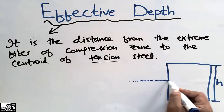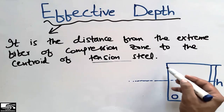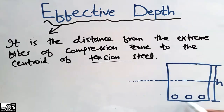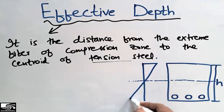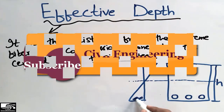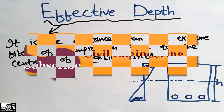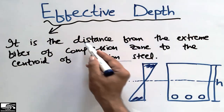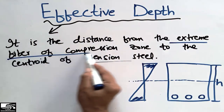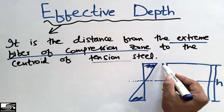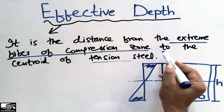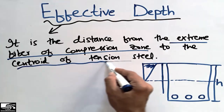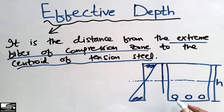We know that beams have a neutral axis. Above the neutral axis we have the compression zone, and at the bottom we have the tension zone. The stress diagram shows tensile stresses at the bottom and compressive stresses at the top. The effective depth is the distance from the extreme fiber of the compression zone down to the centroid of the tension steel — that is, the centroid of the reinforcement.